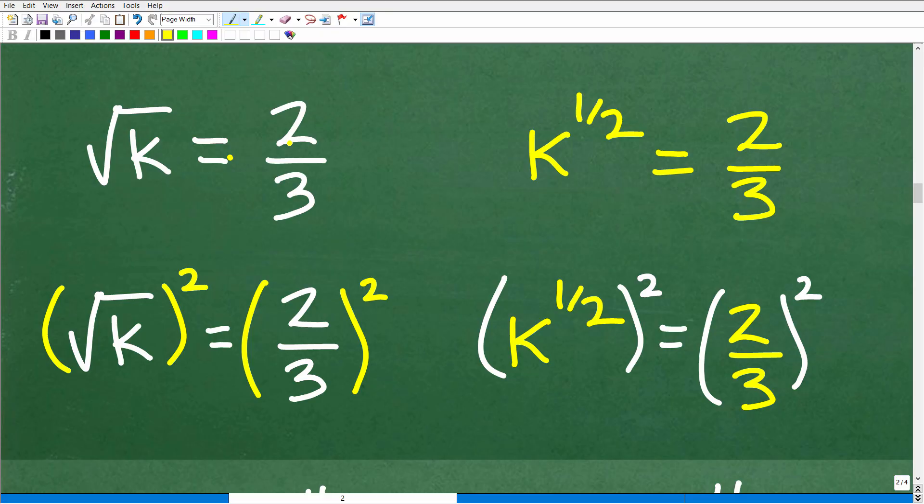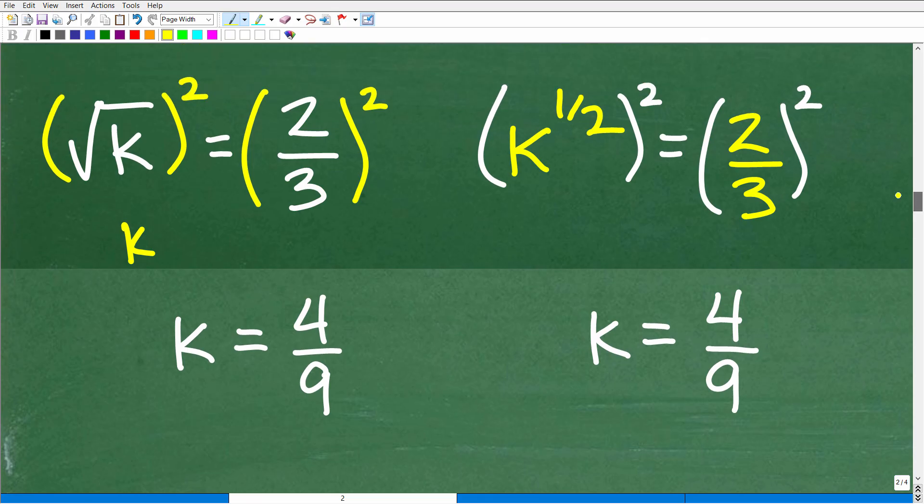You can view this as an equation with a square root, or you can view this in terms of rational exponents. Let's take a look at both ways. Here's the square root of k equals 2 thirds. How can I solve for k? Well, if I have the square root of k, what I need to do to get to k is I have to square both sides. If I square this side and square this side, I'm going to get k by itself. The square root goes away. So here, the square of the square root of k is going to be k. And the square of this is going to be 2 thirds times 2 thirds, which of course is going to be 4 over 9.